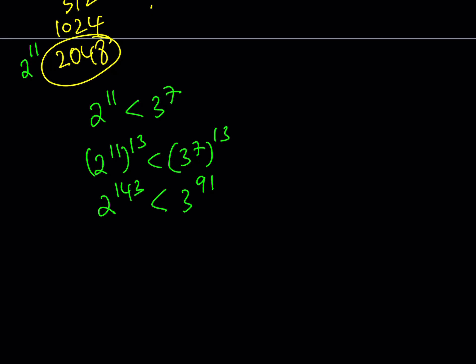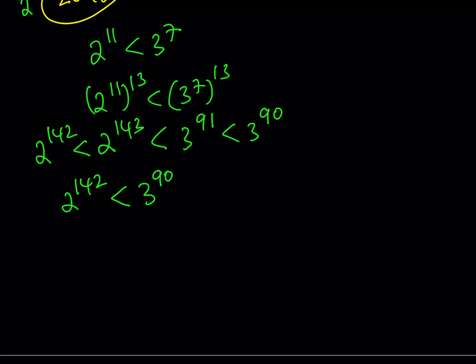I can definitely use the fact that 2 to the power 142 is less than 2 to the power 143. And 3 to the power 91 is greater than 3 to the power 90. So what does this chain of inequalities tell us? It tells us that 2 to the power 142 is less than 3 to the power 90. That's the result pretty much. If you replace 3 to the power 90 with the original expression, which was 9 to the power 45, you'll get the result.